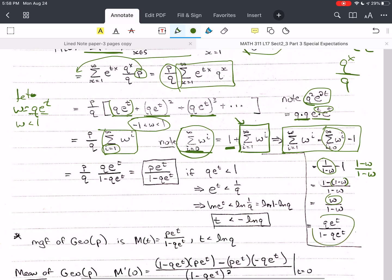I plug back in. And I get q e to the t over 1 minus q e to the t.